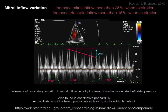Pulsus paradoxus can also be assessed with Doppler echo by looking at mitral inflow and tricuspid inflow variation with inspiration and expiration. Personally, I recommend training in basic echo first before moving on to Doppler assessment.